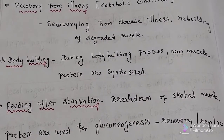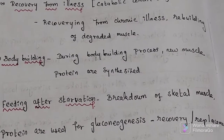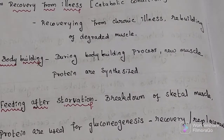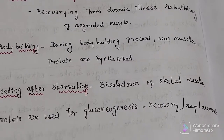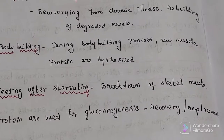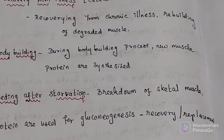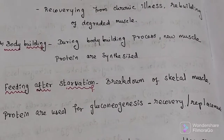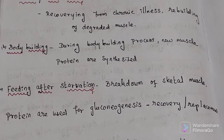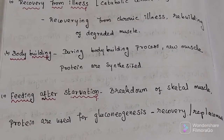The fifth condition is feeding after starvation. During starvation, skeletal muscle proteins are broken down and used for gluconeogenesis. When feeding resumes after starvation, recovery is going on — previously degraded muscle proteins are being replaced. This replacement process is another example of positive nitrogen balance.